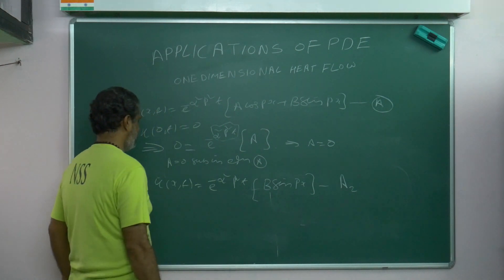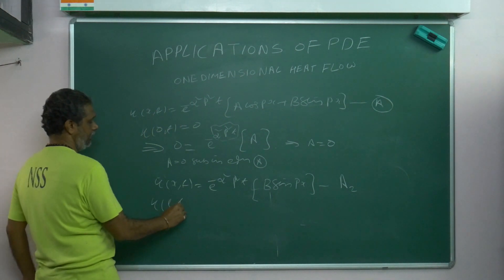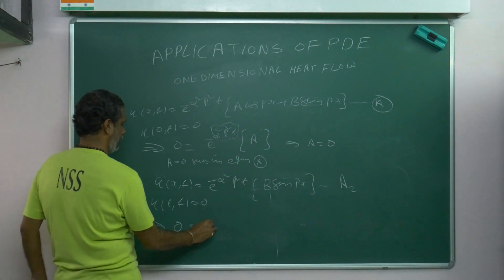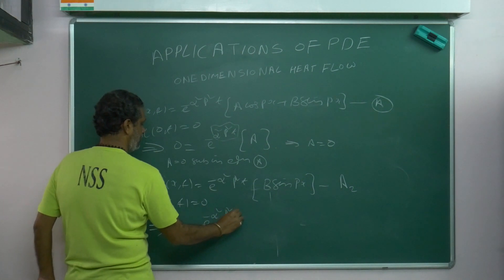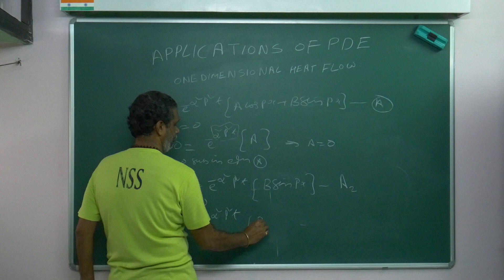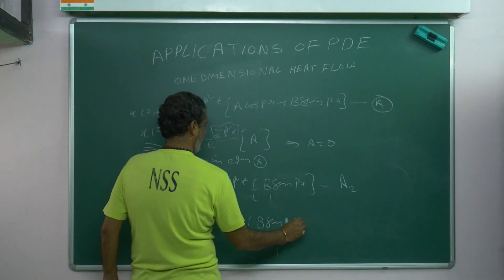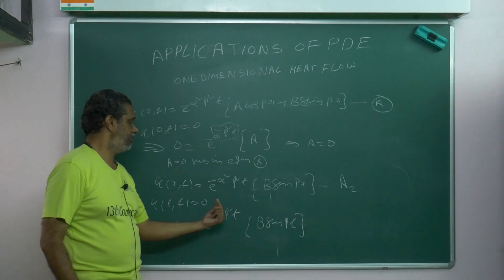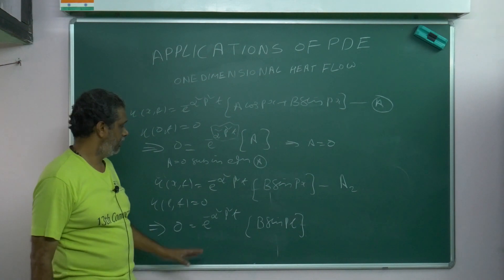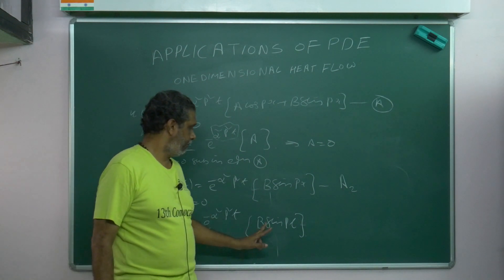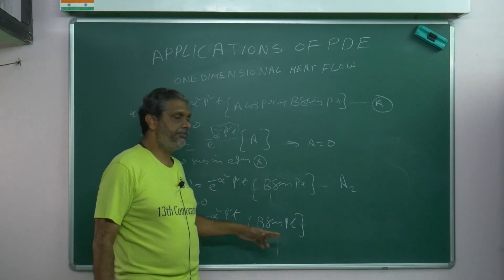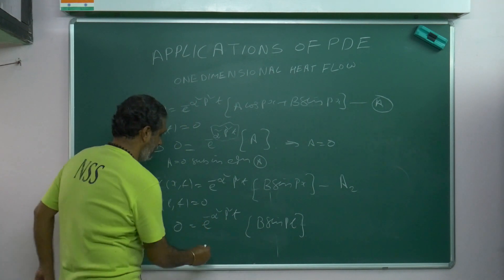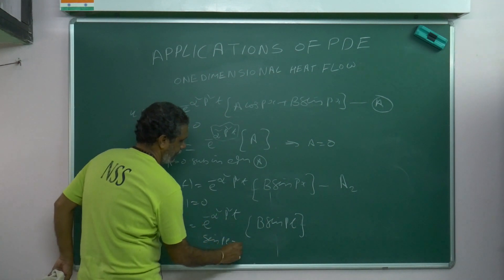Now, the second condition: u(L, t) = 0 implies, putting x = L: e^(−α²b²t) · B sin(bL) = 0. The exponential cannot be zero (that would mean infinite temperature — we cannot stand near the rod). B also cannot be zero, since if A = 0 and B = 0 there is no solution — trivial. So the only chance is sin(bL) = 0.